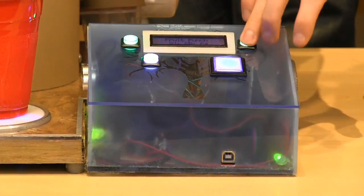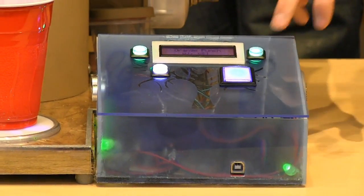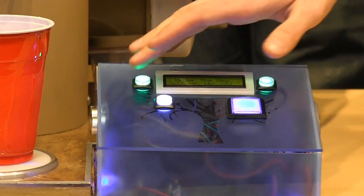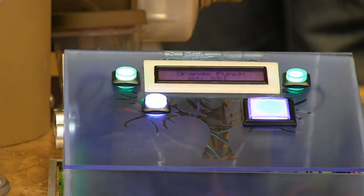Two green buttons go left and right through the menu, and you can select a drink that way. When you decide what drink you want, you can use the white button, and then it will select it and start pouring.